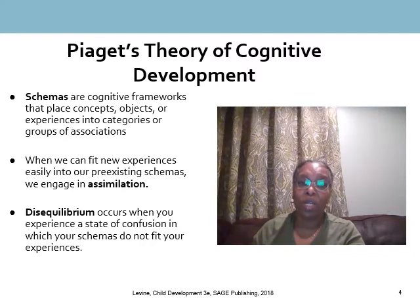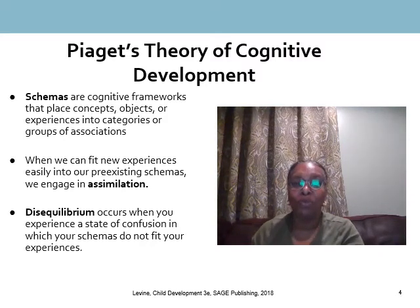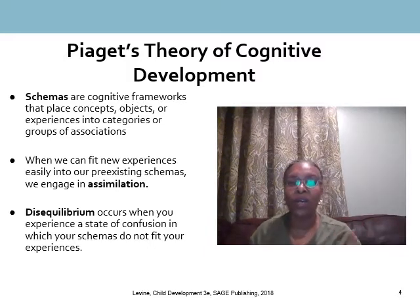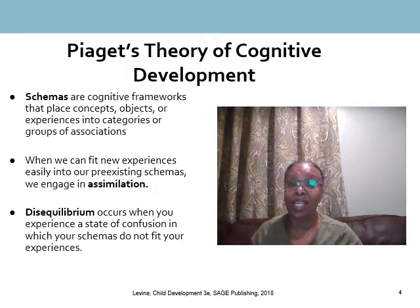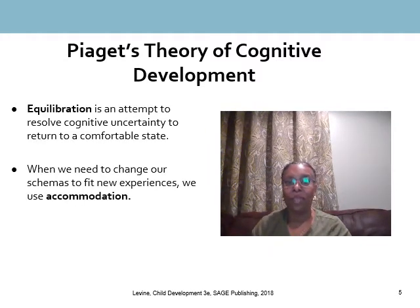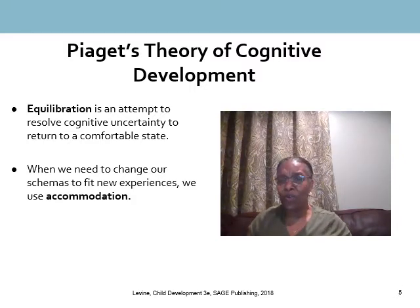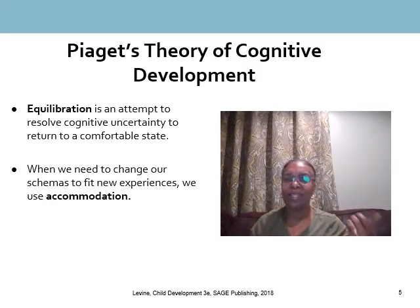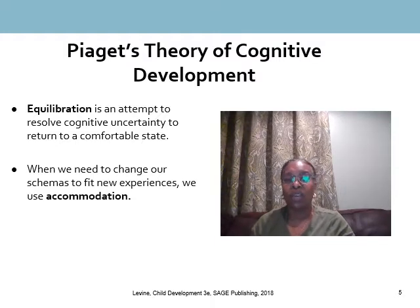Disequilibrium happens when we experience some confusion in which our schemas are not fitting with the experience. Think about a child trying to learn how to tie their shoes — they may face disequilibrium as they try to physically maneuver the laces while thinking through the steps and developing a new schema for shoe-tying. People generally find disequilibrium uncomfortable, like an anxious and awkward feeling when you don't know something. Usually, you'll try to make sense of what's going on and return to a more comfortable state, which Piaget calls equilibrium.